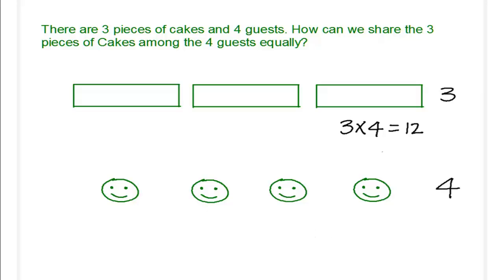The concept behind is what we call as LCM. We were trying to find out the lowest common multiple of three pieces and four guests. And how did it work out?